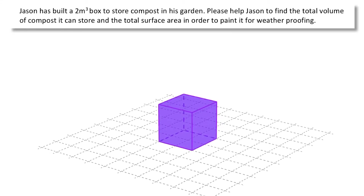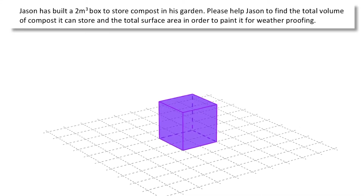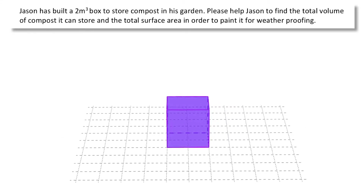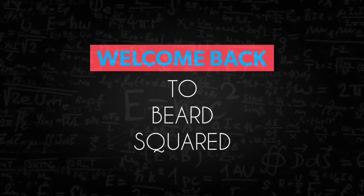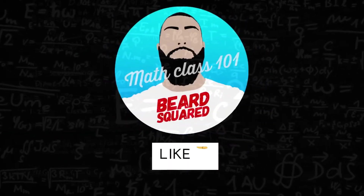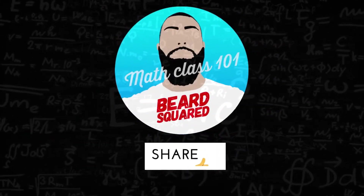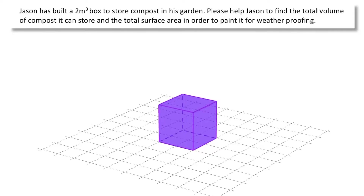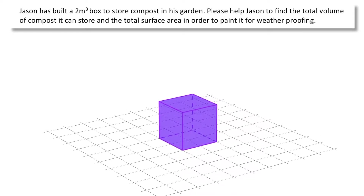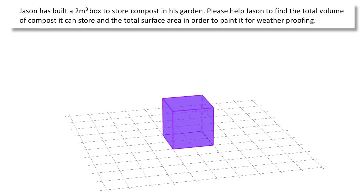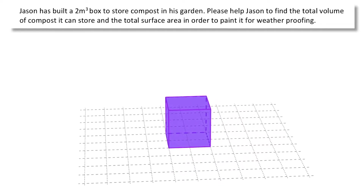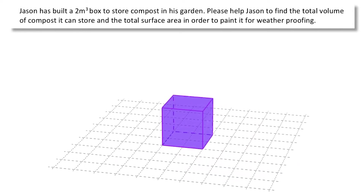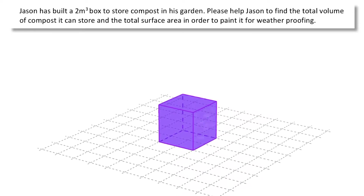Hey, welcome back. In this video we're going to find the volume and surface area of cubes and cuboids. Jason has built a 2-meter box to store compost in his garden. Please help Jason to find the total volume of compost it can store and the total surface area in order to paint it for weatherproofing.